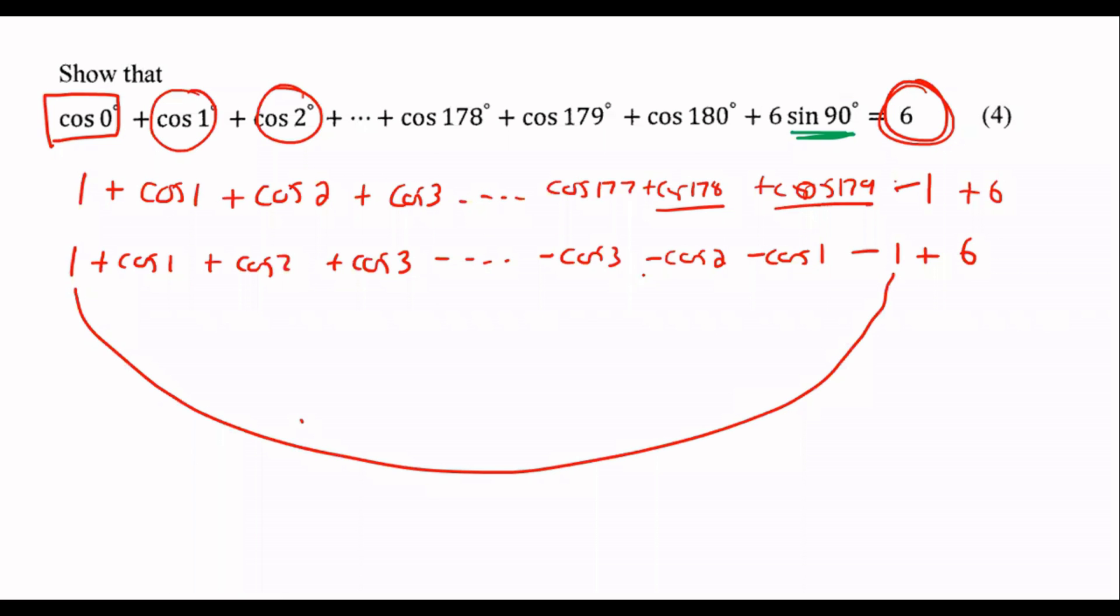These two cancel, these two cancel, these two cancel, and everything in between would also cancel. So what are we left with? Six. So it's so silly hey, and that's usually how these questions work.